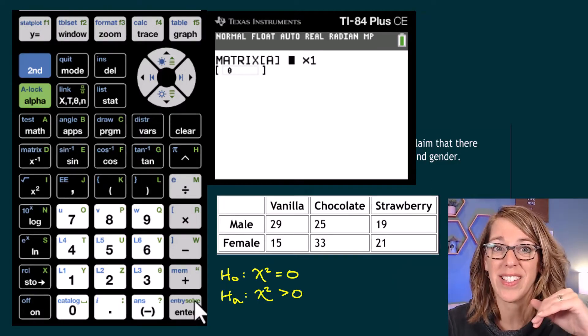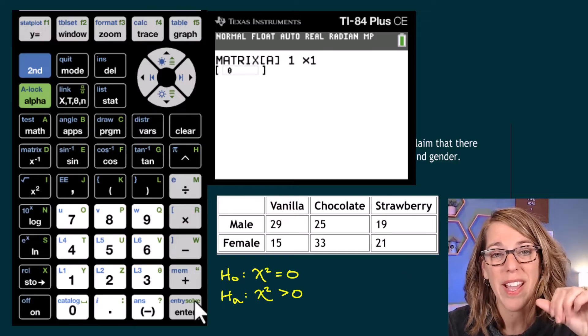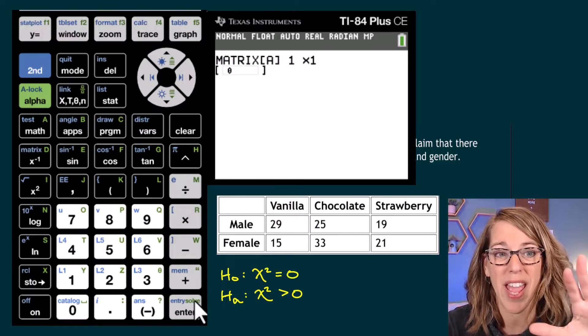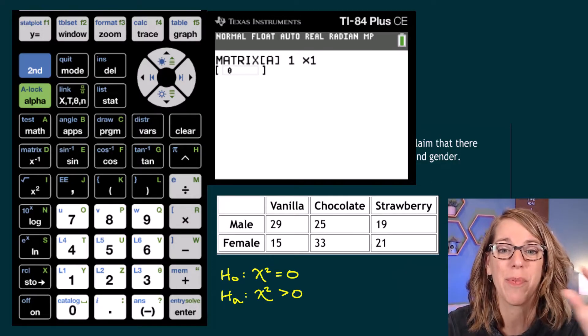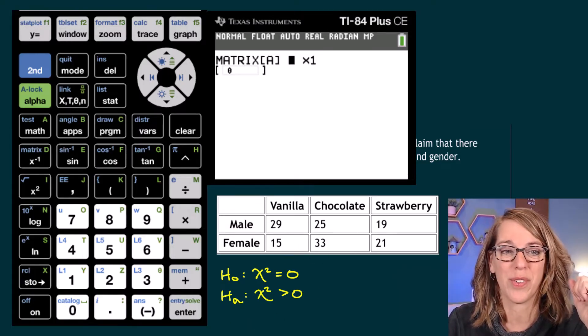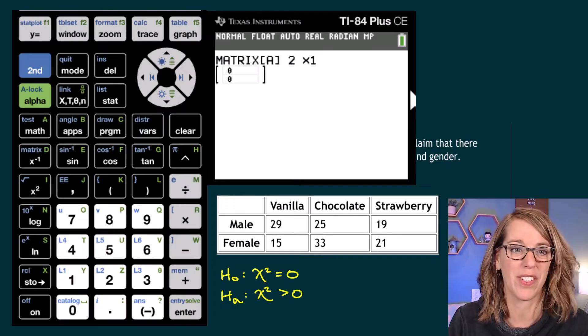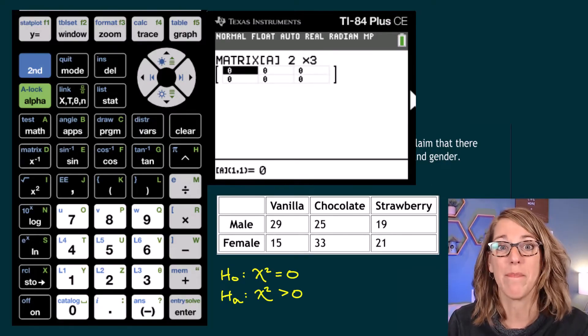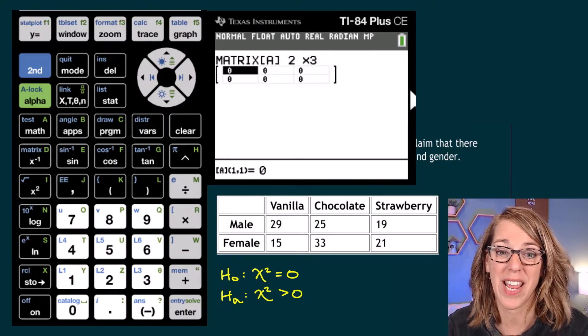Now it's asking me for the size of the matrix. This is row by column, but if you don't remember that, that's okay. Just make sure the size you end up with matches the data that you've got in your table. So I've got two rows and three columns. So I'm going to call this a two by three, and that matches with the shape of my table.